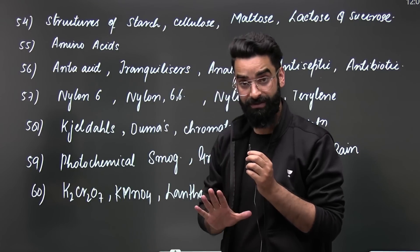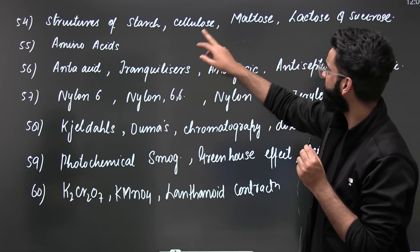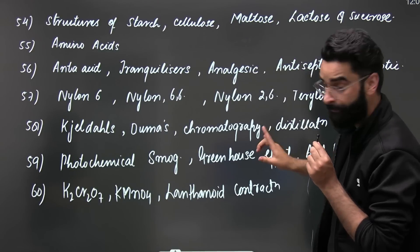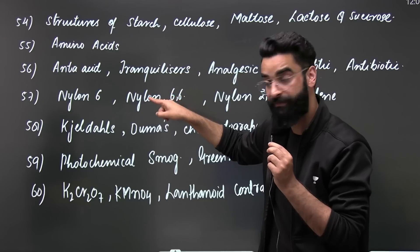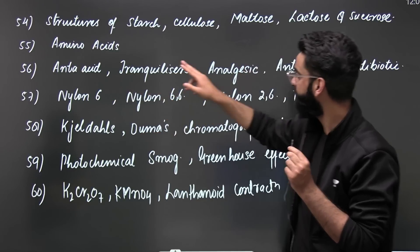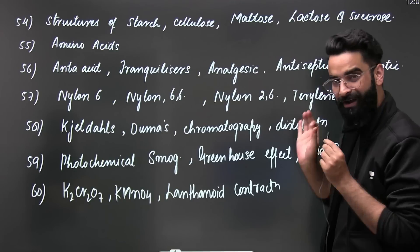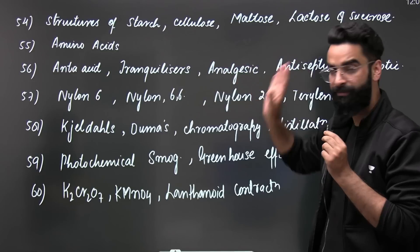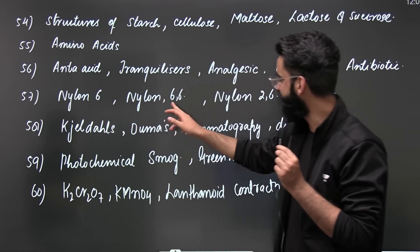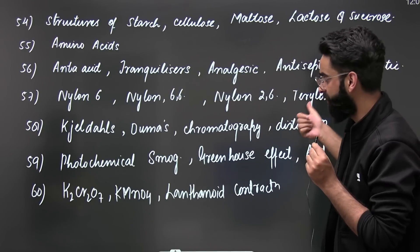Till now we have done some 53 topics. Now talking about the 54th: structure of starch, cellulose, maltose, lactose, and sucrose; important amino acids - very important - and all these topics you are going to cover only from your NCERT; anti-acid, tranquilizers, analgesic, antiseptic, antibiotic - again very important topics, directly read them from your NCERT. Similarly, nylon 6, nylon 66, nylon 2-6, and terylene - these are again some important compounds which you need to focus more.